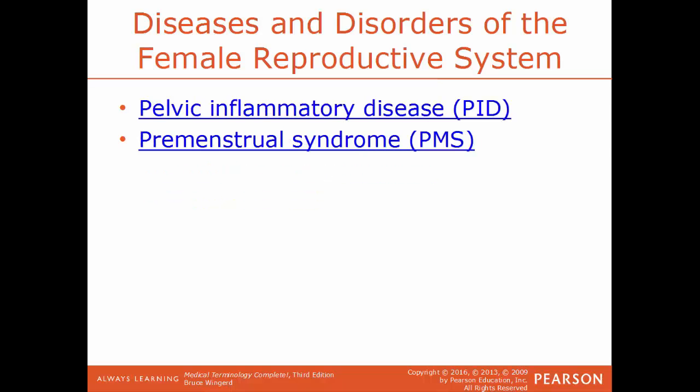PID, pelvic inflammatory disease, is an inflammation of the genital tract of the female, usually caused by the spread of bacteria from the vagina to the uterus, fallopian tubes, and ovaries. PMS, premenstrual syndrome, covers a large number of symptoms that some women experience just before menstruation — including acne, tender breasts, bloating, mood changes, and irritability.